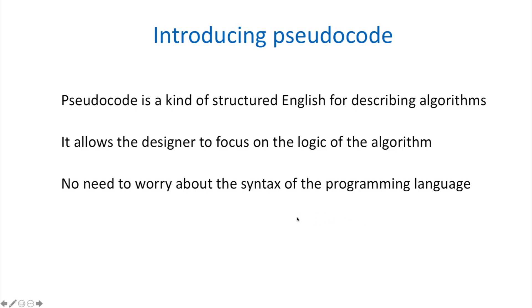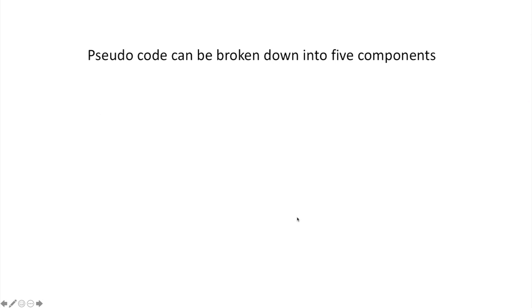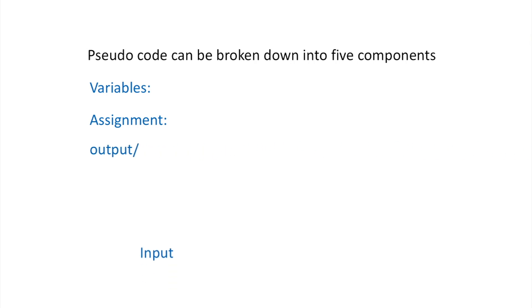Pseudocode can be broken down into five components: you can have variables and assignments, output, input, selection, and iteration. We're going to look at each one individually, starting with assignment.